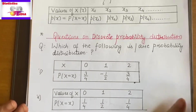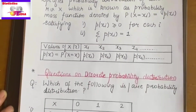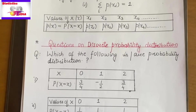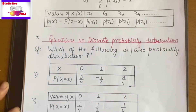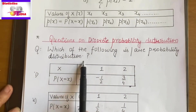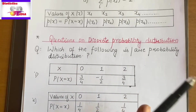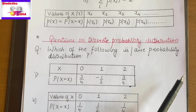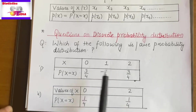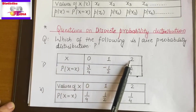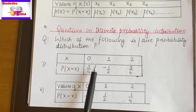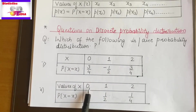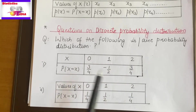Now we will implement the theory of discrete probability distribution and PMF with the help of questions. The question asks: which of the following is a valid probability distribution? First, how do we identify? In the question, X is a random variable taking values 0, 1, 2 — these are countable values that you can arrange in sequence. So just by observation, you can identify that the random variable is discrete. So we now check whether the given distribution is a valid PMF.